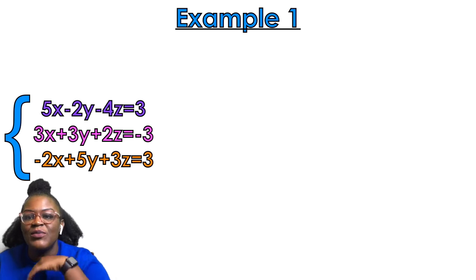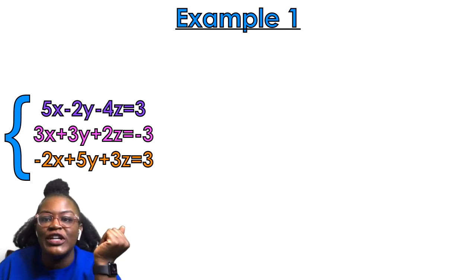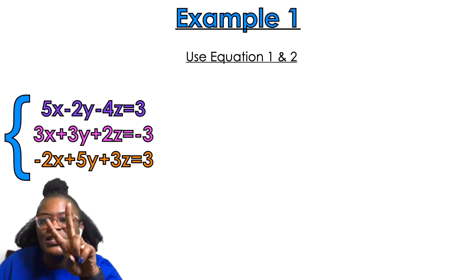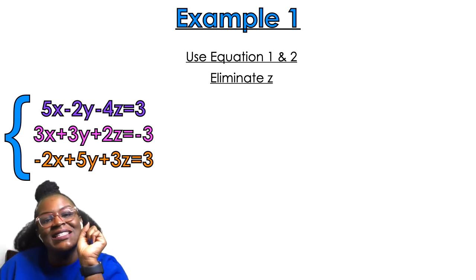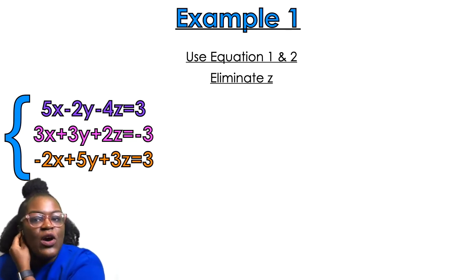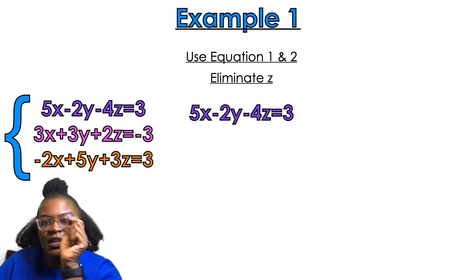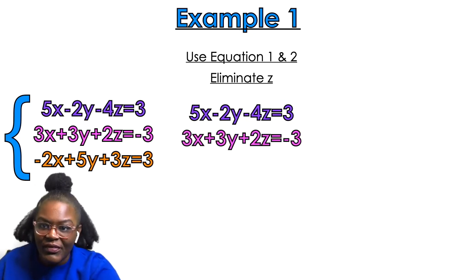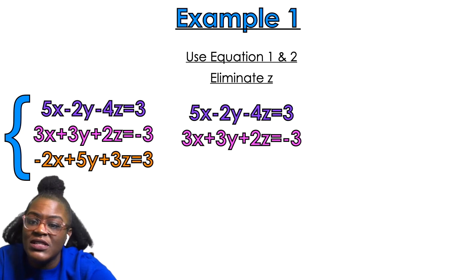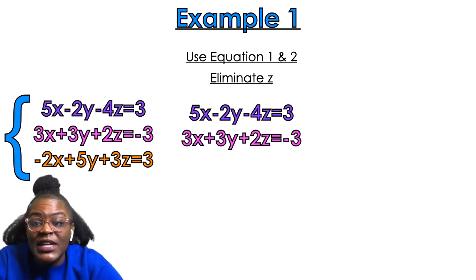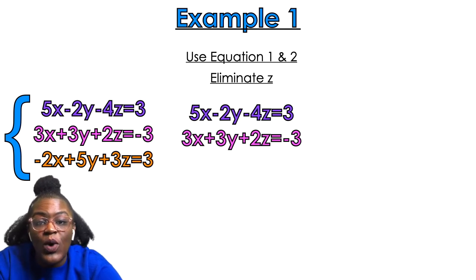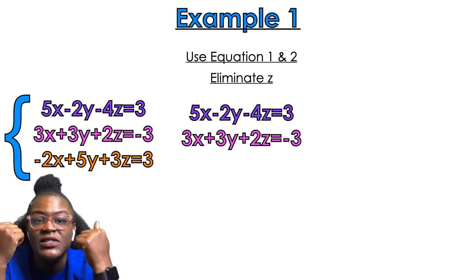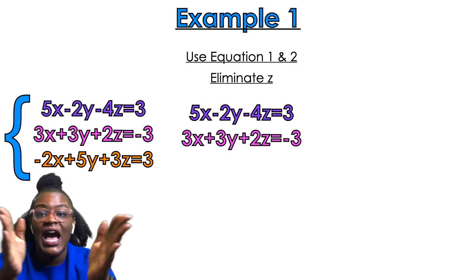Example number 1. The first thing you're going to do is use equation 1 and 2 to eliminate z. So we're going to take the purple equation and the pink equation. Looking at them, I have a negative four in front of the first z and a two in front of the second z. So I need to think: how would I eliminate those z's? To eliminate, I need opposites.